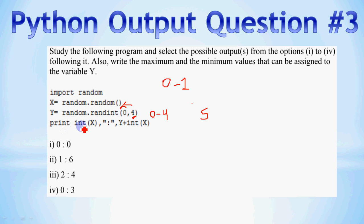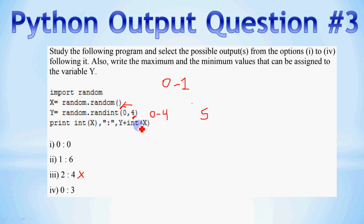Now let's look at the print statement: print(int(x), ':', y + int(x)). When we convert x to integer using int(), the decimal part is dropped, so int(x) will be either 0 or 1. This means any option where int(x) equals 2 is invalid and can be ruled out. The maximum possible output for y + int(x) is 4 + 1 = 5, so any option showing 6 is also invalid.